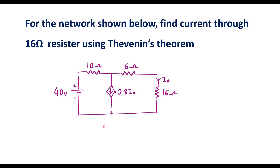In this video, I will consider one numerical on Thevenin's theorem. For the network shown below, find the current through the 16 ohm resistor using Thevenin's theorem.